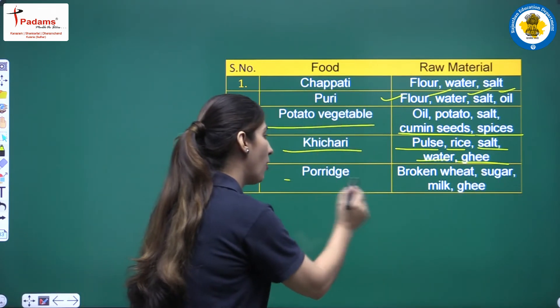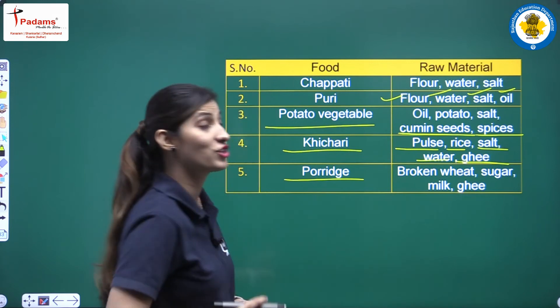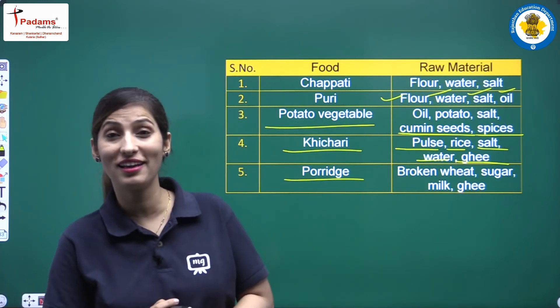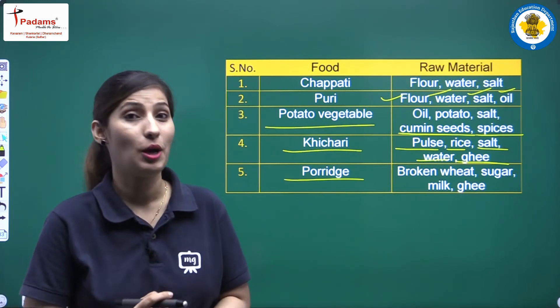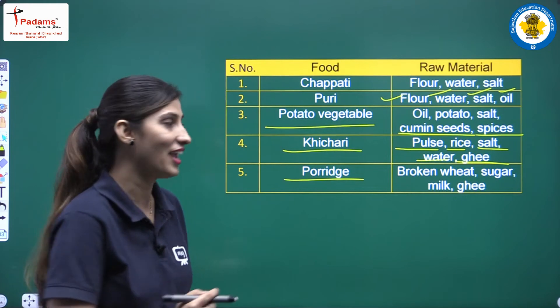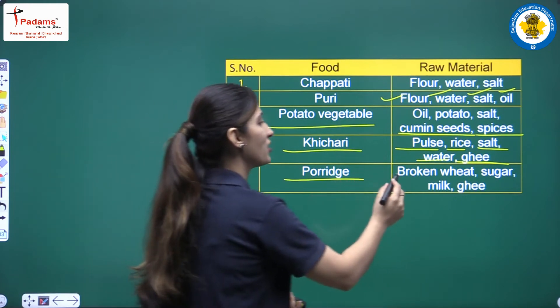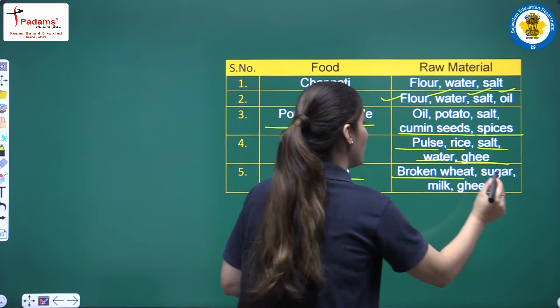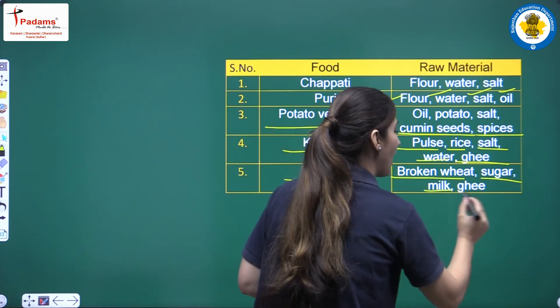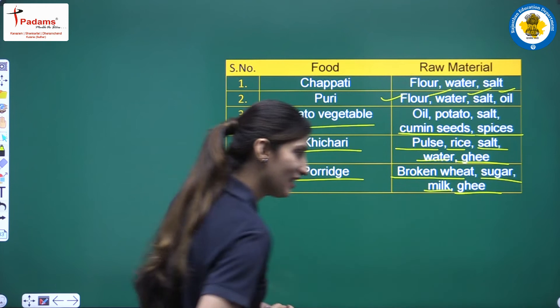Next one is porridge — daliya. What do we need to make daliya? Broken wheat, sugar, milk, and ghee.